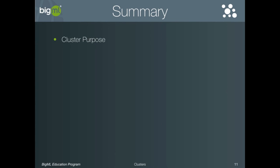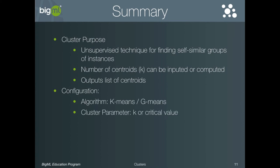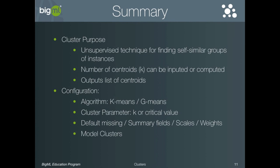In this tutorial, we have seen that clustering is an unsupervised learning technique for finding groups of self-similar instances in your data, and also that the number of groups can either be specified as part of the analysis or can be left to the platform to discover. In either case, the cluster groups discovered are represented by a list of centroids, which define the center of each group. As for configuration options, we learned about the two available algorithms — k-means and g-means — and the related cluster parameters, the k-value and the critical value. We also discussed the options for dealing with missing numeric values, adding summary fields, and the impacts of scales and weights. And we saw that the cluster model option can be enabled to help understand the characteristics that define each cluster group. Finally, we explored how a cluster can be used to assign the centroid label to new data using either a single centroid calculation, or a batch centroid to label an entire dataset.